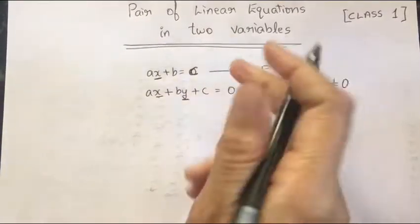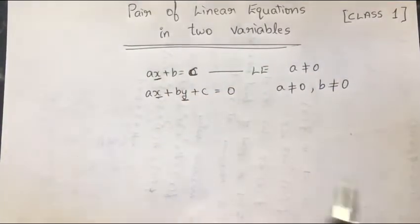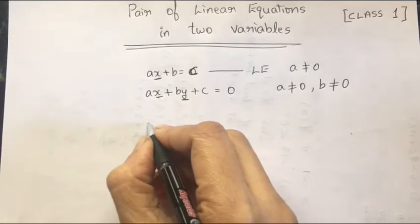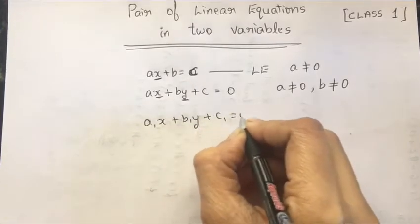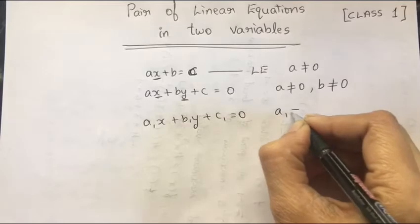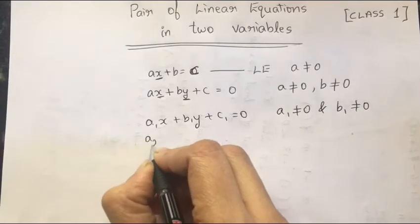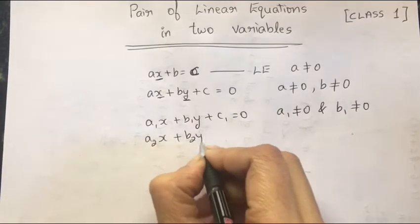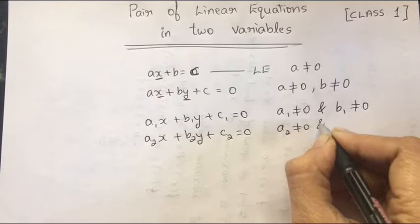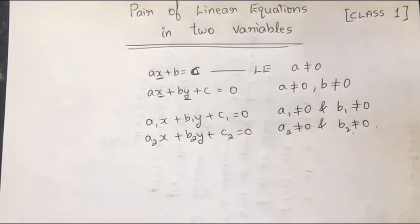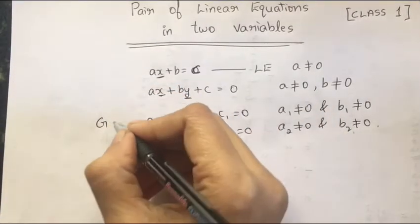When we say pair of linear equations, there have to be two equations with two variables. In general, we write them as: a1x plus b1y plus c1 equal to 0, with a1 not equal to 0 and b1 not equal to 0; and a2x plus b2y plus c2 equal to 0, with a2 not equal to 0 and b2 not equal to 0. This is the general form.